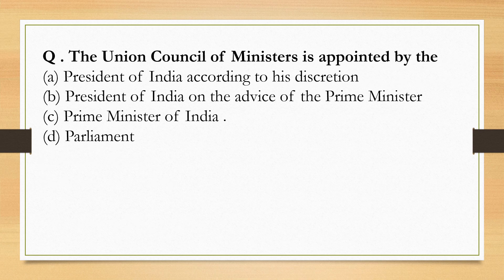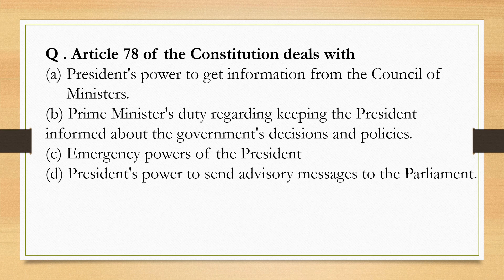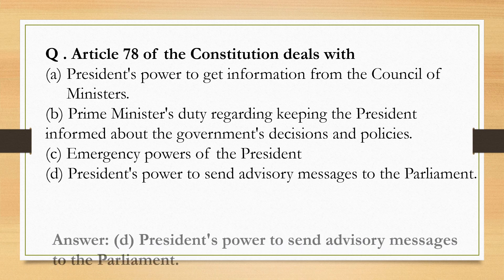The Union Council of Ministers is appointed by the President of India on the advice of the Prime Minister. The Prime Minister's advice is compulsory for the President while selecting the Union Council of Ministers. Article 78 of the Constitution makes provision to give power to the President to send advisory messages to the Parliament — Option D is the correct option.